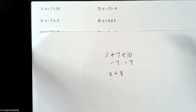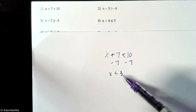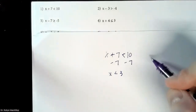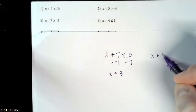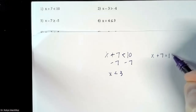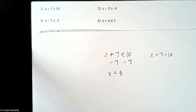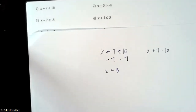x is less than 3. So x could be 2, it could be 1, it could be negative 45. We don't know — we just know it's less than 3. It's the exact same setup, just like if this was written with an equal sign. Exact same process. Let's do a couple more of these, then we'll move into multiplication and division, then we'll move into the longer ones where the weird things happen.